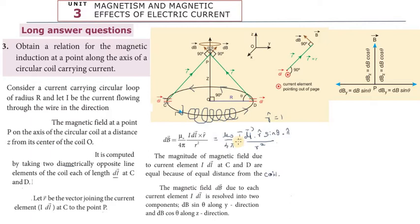Next, find the magnitude of the magnetic field due to the current carrying elements idL at C and D. They are equal because of equal distance from the coil center. So the magnitude of the magnetic field is the same for both — C and D are at equal radius from the center.